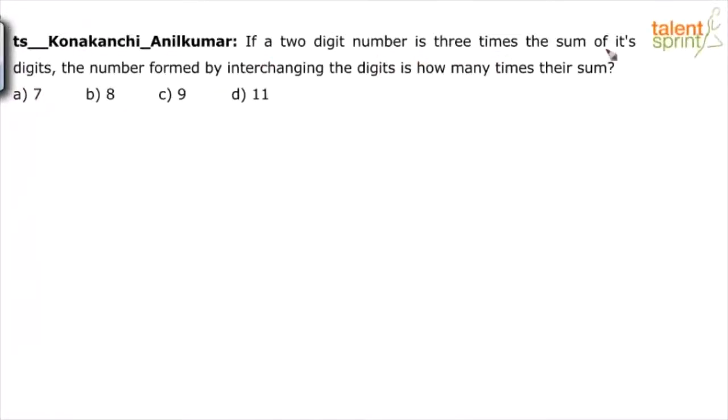If a 2-digit number is 3 times the sum of its digits, the number formed by interchanging the digits is how many times their sum? How do you solve this?